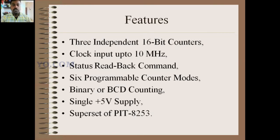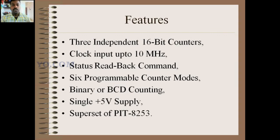Before discussing 8254 we must know its different features. The 8254 has three independent 16-bit counters. The difference between a timer and a counter is: a timer generates pulses according to our requirement based on the program given into 8254, whereas a counter can count external pulses coming from the real world. So it acts as both a timer or counter — three timers and three counters are present.